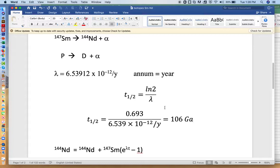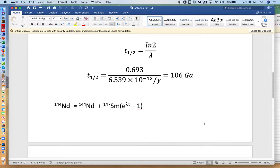And then here's the equation similar to what we saw before with Rubidium and strontium. The total neodymium 144 that we see in the system is whatever we see initially.